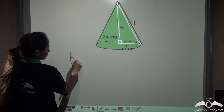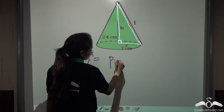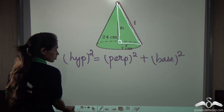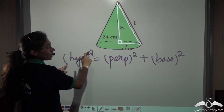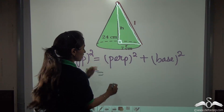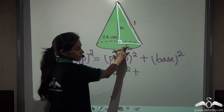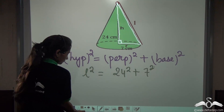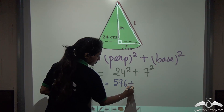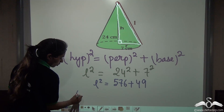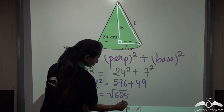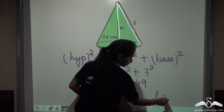What does the Pythagoras theorem say? Hypotenuse squared is equal to perpendicular squared plus base squared. Let us substitute our values of the cone into this formula. The hypotenuse here is the slant height, that is L. So L squared equals perpendicular, which is height — given as 24 cm — so 24 squared, plus base, which is the radius — 7 cm — so plus 7 squared. Solving this: L squared equals 576 plus 49, which is 625. So L equals the square root of 625, giving us L equals 25 cm.